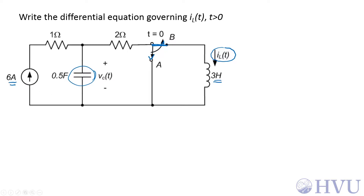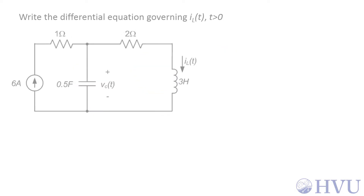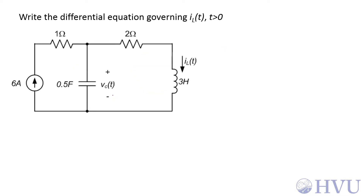The constant source is connected to the inductor, so the inductor will charge up. Since we need the differential equation for t greater than zero, let's go ahead and redraw the circuit with the switch in the correct position. This leg won't matter anymore, so it will be missing. When I do a circuit analysis or write the differential equation for a circuit, I always label capacitor voltages and inductor currents as my unknowns.